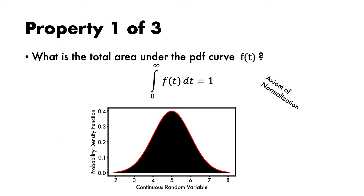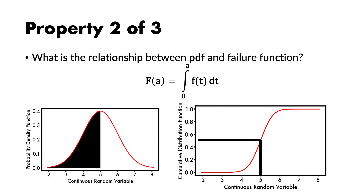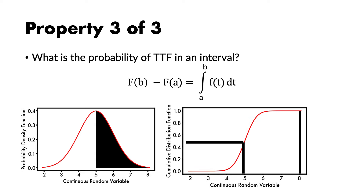To summarize, three important properties: first, the total area under the pdf curve must equal 1, following from the normalization axiom. Second, the pdf and the failure function are related — you go from one to the other by integrating or differentiating. Third, if you want the probability that the TTF falls within an interval such as between 2 and 5, you subtract the failure function values at those points, or integrate the pdf between those limits.